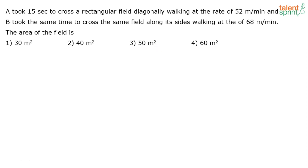This is an interesting one where the problem clubs the concept of time and distance along with mensuration. There are two persons A and B. A has taken 15 seconds to cross a rectangular field diagonally walking at the rate of 52 meters per minute, while the other person B has taken the same time — 15 seconds — to cross the same field along its sides walking at the rate of 68 meters per minute. What is the area of the field?